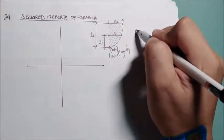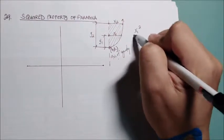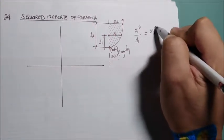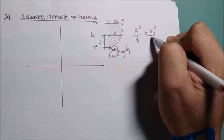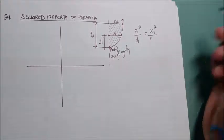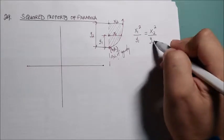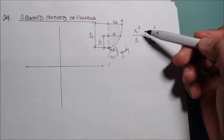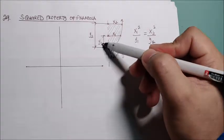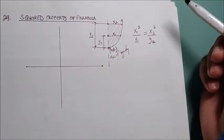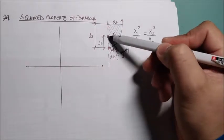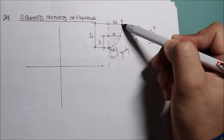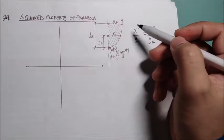The squared property of parabola, we have x1 squared over y1, that is equal to x2 squared over y2. This is very important. For example, given x1 and y1, and given this distance, you want to know this distance from this point to that point.